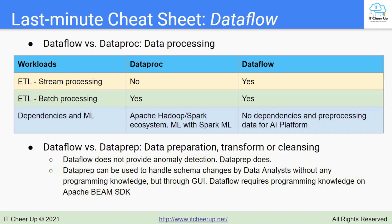Now let's look at the difference between Dataflow and Dataprep on data preparation, transformation, or cleansing. Dataflow does not provide anomaly detection — Dataprep does. Dataprep can be used to handle schema changes by data analysts without any programming knowledge, through a GUI. Dataflow requires programming knowledge on the Apache Beam SDK.